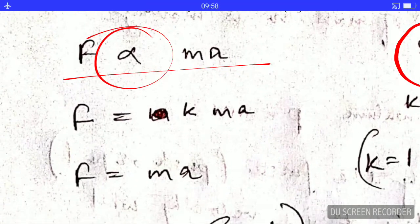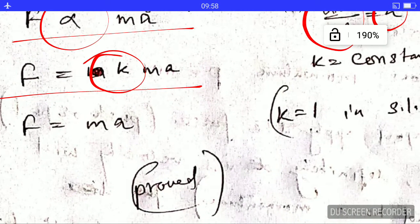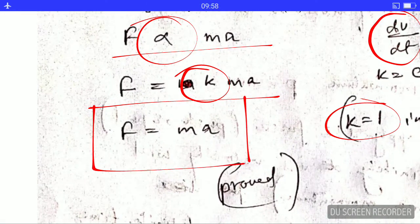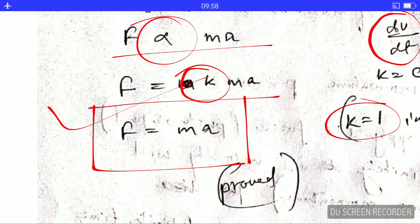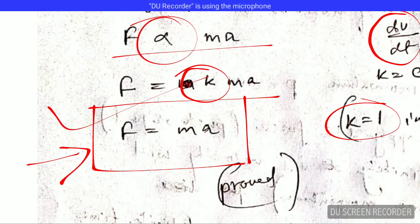Since the first differential of V with respect to time is acceleration, we get F proportional to mA. Removing the proportionality by inserting a constant K, and noting that in SI units K equals 1, we arrive at F equals mA. This completes the derivation of Newton's second law of motion from the fundamental concept of change in momentum.